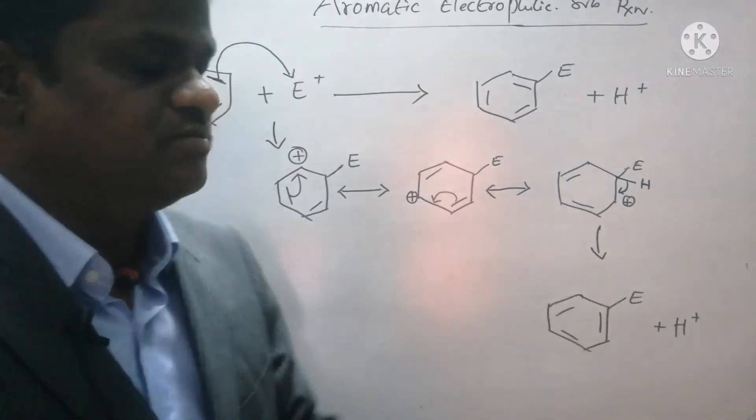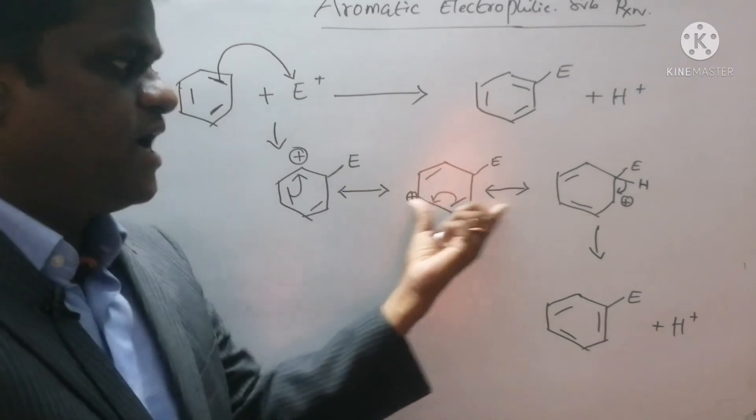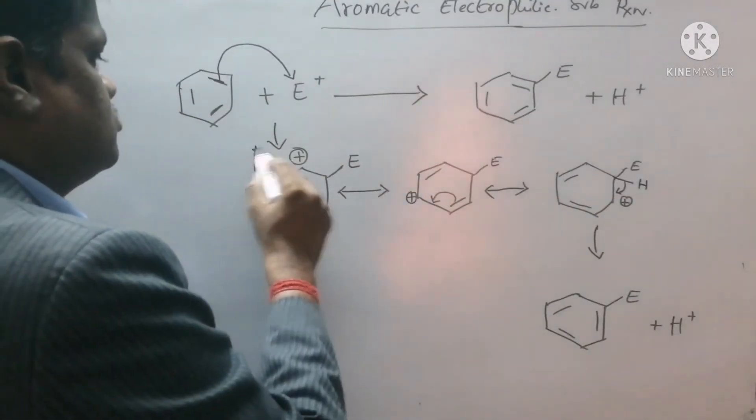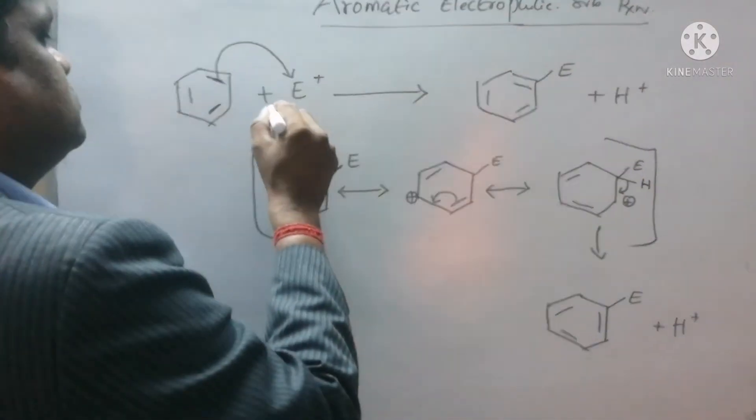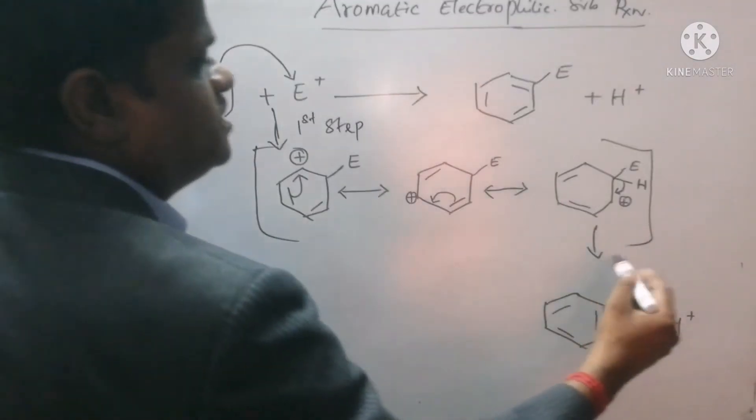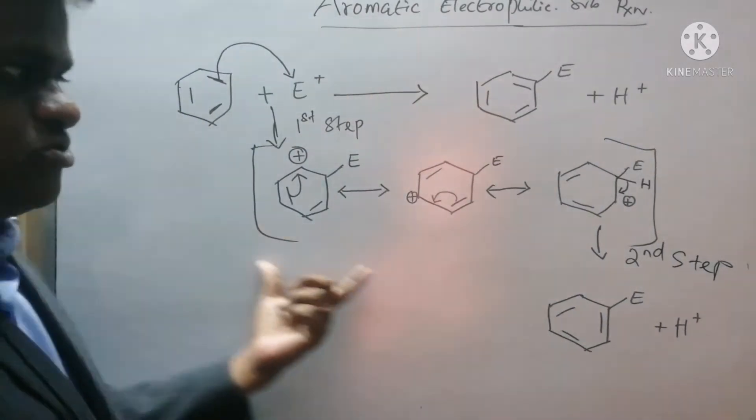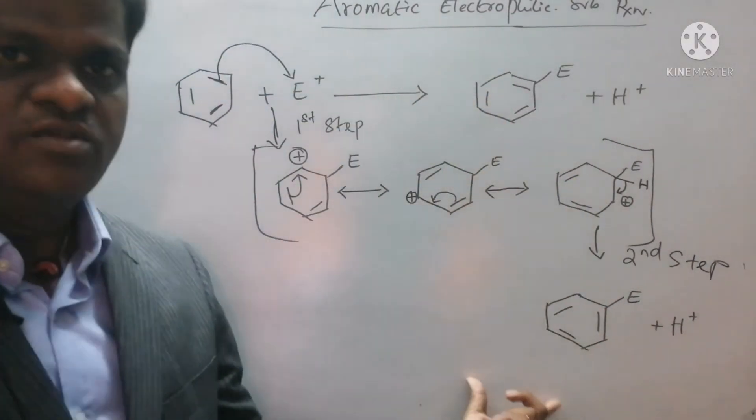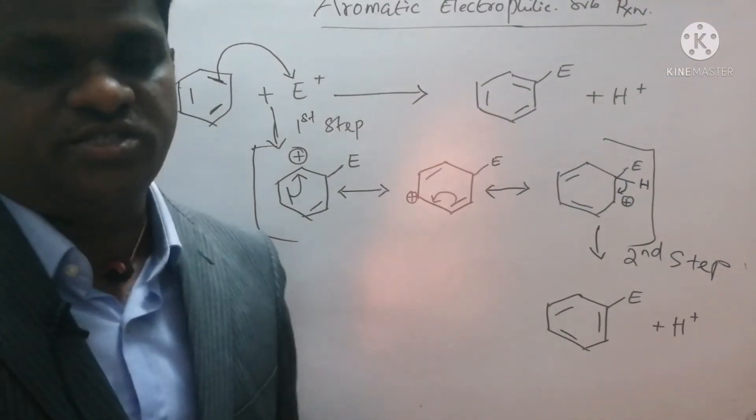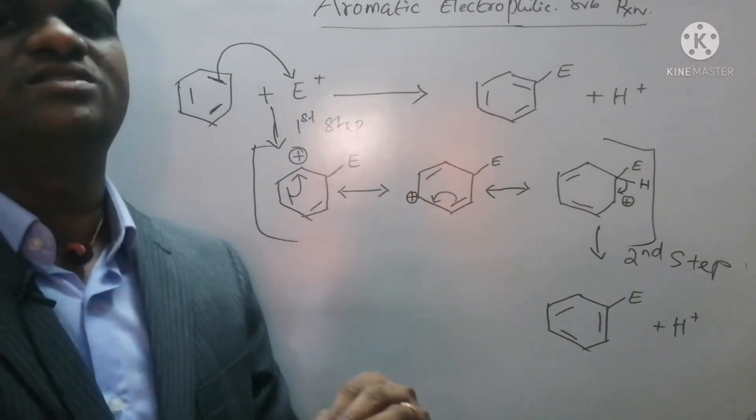So please listen carefully. You see, we used these double-headed arrows. Double-headed arrows are resonance structures. This could not be a step. So this is first step and this is the second step. Now could you tell me, how many steps have been involved? There are a total of two steps have been involved in this reaction. Now in addition, we will see the reaction kinetics.